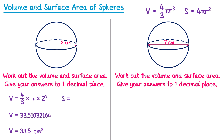For the surface area, we do 4 multiplied by π, multiplied by r squared, so 2 squared. Typing this into the calculator and rounding to one decimal place gives 50.3 centimeters squared.